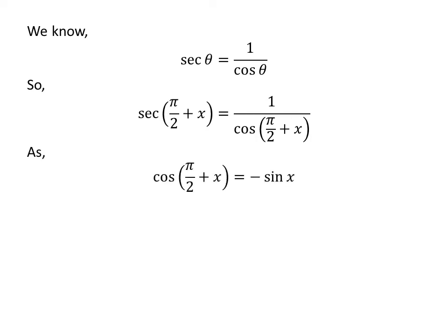We also know the trigonometry identity cosine of half of pi plus x is equal to minus sine of x. The proof of this trigonometry identity has been explained in the video appearing in the upper right corner. The link of the video has also been mentioned in the description section.